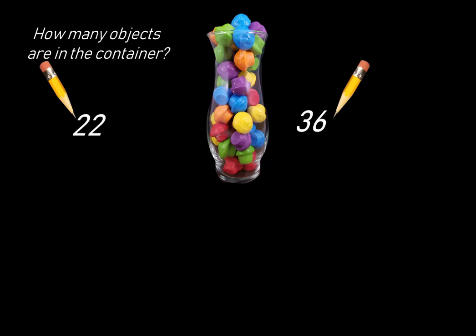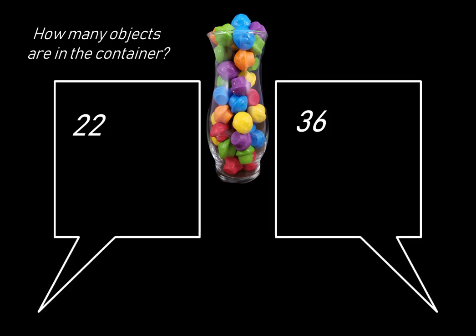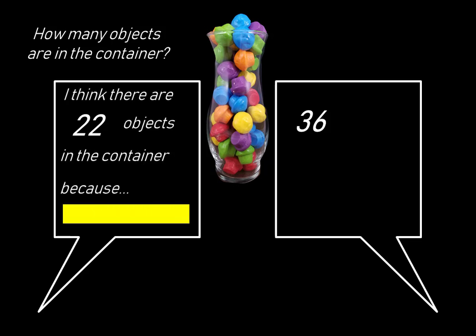Then they tell each other two things. First, what number they chose for their estimate, and second, why they chose that number. For example, I think there are 22 objects in the container because, and here comes the rich reasoning.